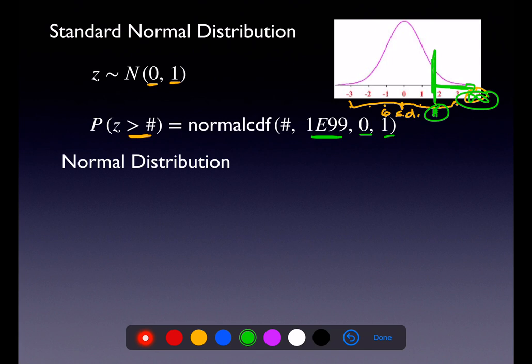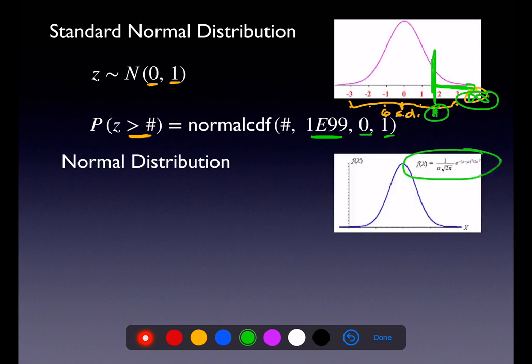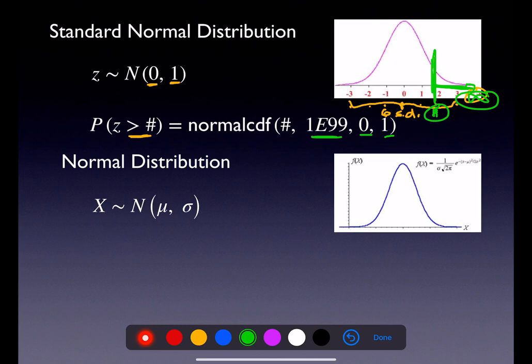On a regular normal distribution — and if you ever get to Calc 2, they'll talk about the formula which actually describes this curve, requiring two antiderivatives to find the area — we've got that this curve is normally distributed, with mu under the peak. You can go about mu plus sigma, 2 sigma, 3 sigma, and mu minus sigma, minus 2 sigma, minus 3 sigma.